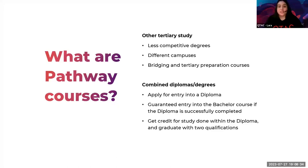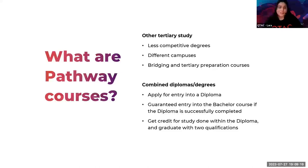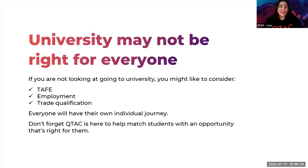What are some pathway course options? You can go to less competitive degrees, different campuses, bridging and tertiary preparation courses. You'll sometimes see combined diplomas and degrees — a diploma of something and then a Bachelor of something. This is a great way to upgrade into the course you really want. For most diplomas you can get nearly up to a full year's credit, so you haven't lost any time, and on successful completion of that diploma you can go straight into the Bachelor. University might not be for everyone — TAFE, employment and trade qualifications are absolutely valid options too.